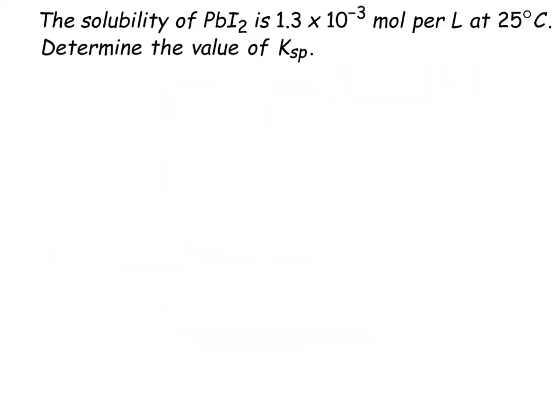Let's try the second half. So, the next part of number 9 says, the solubility of PbI2 is 1.3 times 10 to the negative 3rd moles per liter at 25 degrees C. Determine the value of Ksp. It looks a lot like the one we just did.